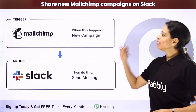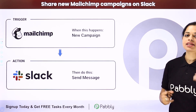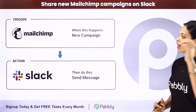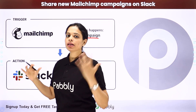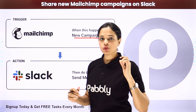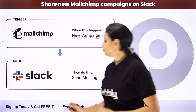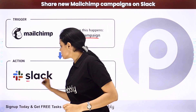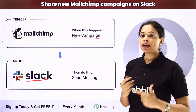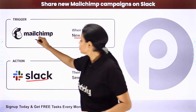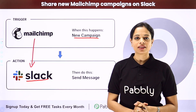In this video, we are going to see how to share new MailChimp campaigns on Slack. Every time a new campaign is designed in MailChimp, which is an email marketing tool, you want that information of that campaign to be shared with your team which is sitting on Slack, which is a social messaging app. This can be done using Pabbly Connect software.